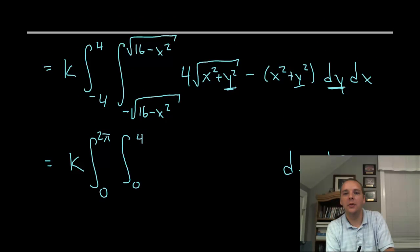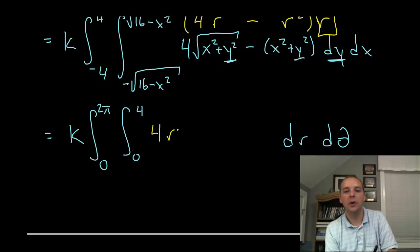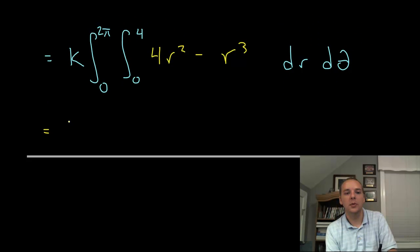And the integrand will be, alright we'll have four. Alright this x squared plus y squared equals r squared. Pythagorean theorem. And the square root of that would give you four r. Alright minus r squared. Alright four r minus r squared. But when we remember our extra factor of r that we talked about, remember we have to include that guy. We'd actually get four r squared minus r cubed. Four r squared minus r cubed.